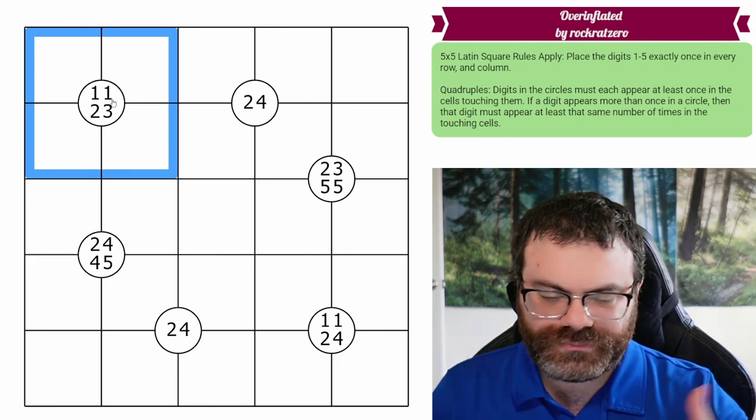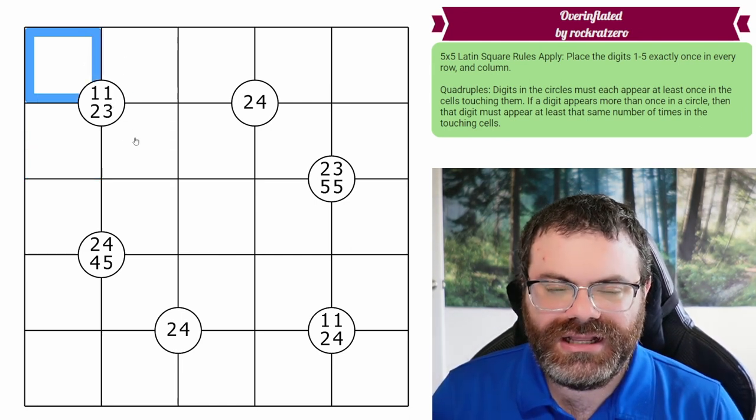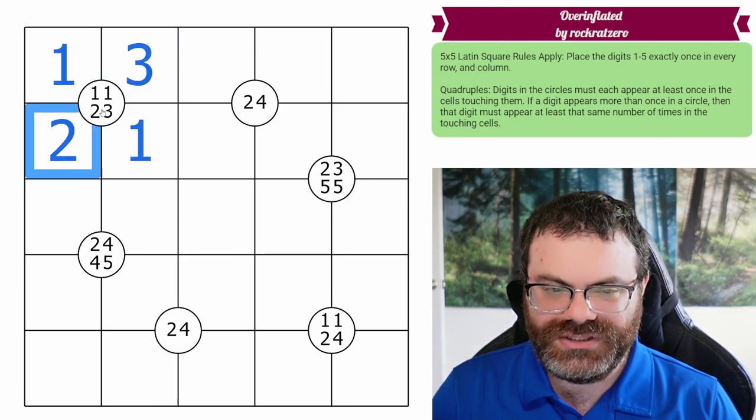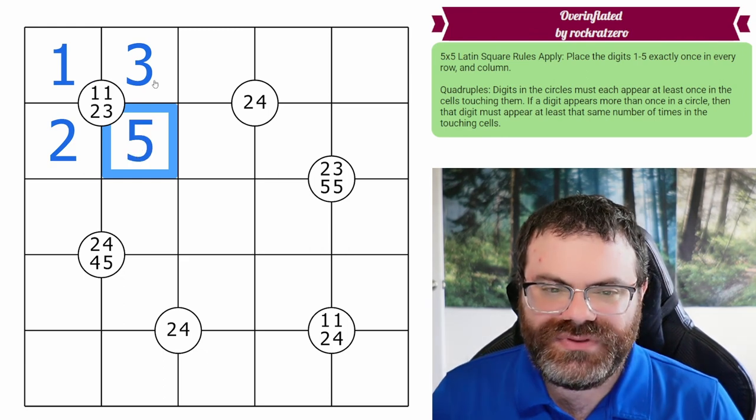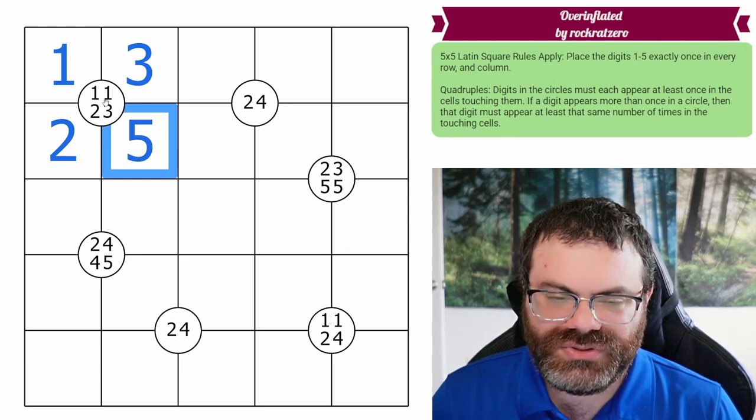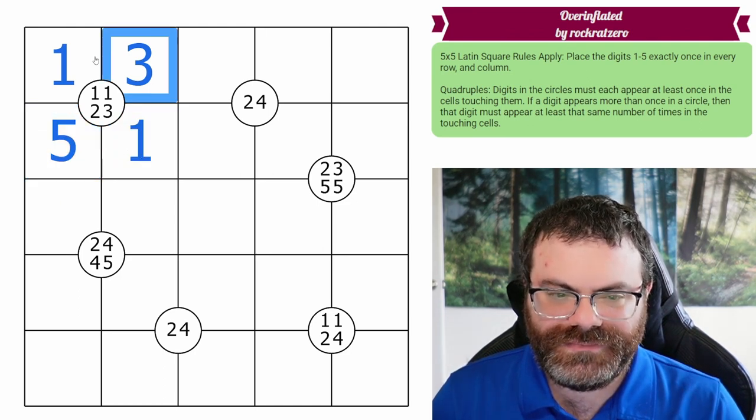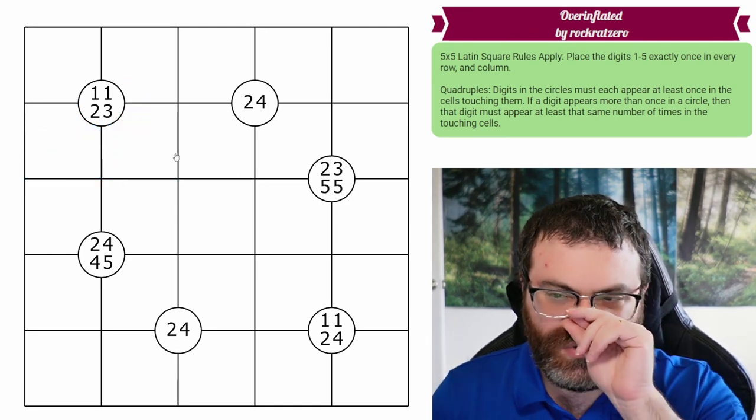And each of the digits listed have to appear at least once within those four cells. If a digit's repeated, it must be repeated. So for example, one way to fulfill this would be like this: two 1s, a 2, and a 3. I can't do this because we need to have at least two 1s in here. I also can't do this because we need at least one 2 in here. So that is how quads work.